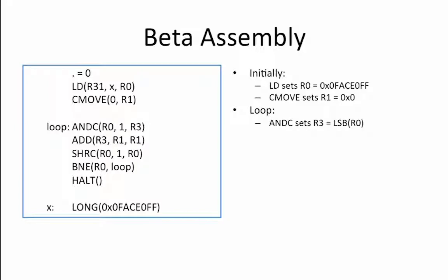It now enters the loop where the ANDC puts into R3 the least significant bit of R0. The ADD increments R1 if R3 equals 1. This means that if the least significant bit of R0 was a 1, then R1 is incremented by 1. Otherwise, R1 stays the same. The shift-right constant then shifts R0 to the right by 1. This makes R0 have a 0 in the most significant bit and the top 31 bits of what R0 used to be are shifted over by one position to the right.